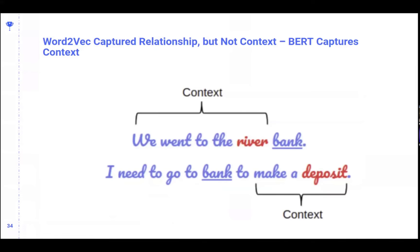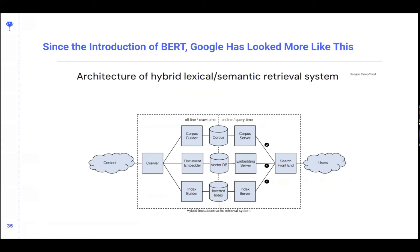A famous example: 'We went to the river bank' versus 'I need to go to the bank to make a deposit.' With Word2Vec, the model didn't understand the difference between 'bank' in both sentences. With BERT, it can — understanding that bank means a financial institution versus a riverbank near water. Their ability to represent documents with that contextual understanding has changed their ability to surface relevant results. With SGE or AI Overviews, there's yet another layer on top, but BERT entrenched the language model within the vector embeddings of the indexing process.